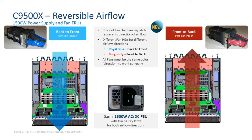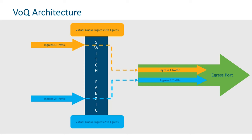You asked for it and we listened — with the 9500 X switches we now support reversible airflow. We have two unique fan tray units corresponding to the airflow direction; choose one depending on your rack requirements. The switch can house a total of six fan trays: five for normal operations and one for redundancy. Note that all six fan trays must be aligned to the same airflow direction.